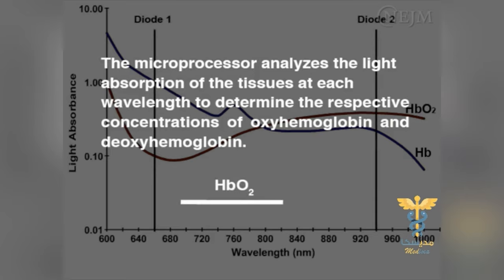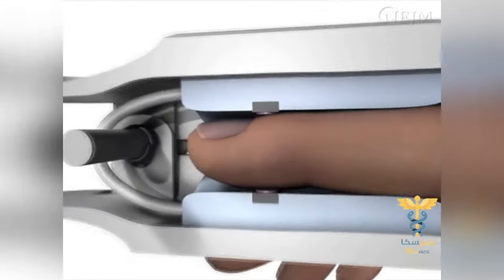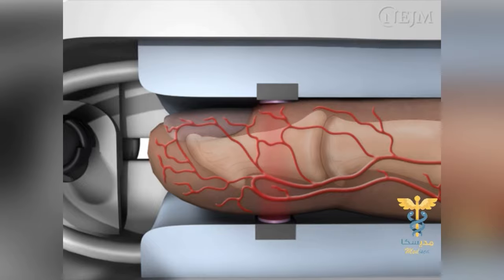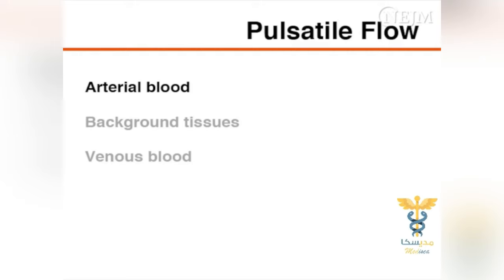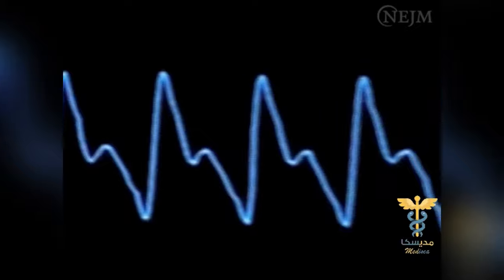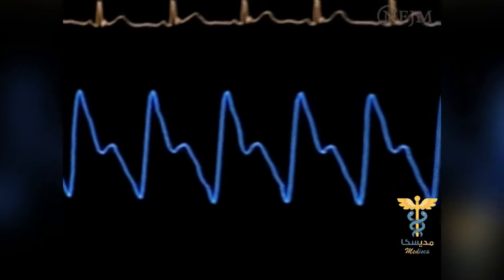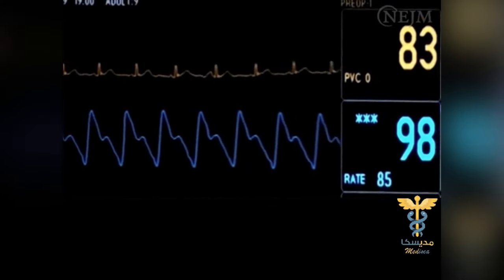The microprocessor divides the concentration of oxyhemoglobin by the sum of the concentration of oxy- and deoxyhemoglobin to determine the arterial blood oxygen saturation, SpO2. The probe is positioned so that the photodetector and light-emitting diodes face each other, with layers of tissue between them. The photodiodes turn on and off several hundred times per second to record the light absorption during pulsatile and non-pulsatile flow. During pulsatile flow, the light absorption of arterial blood, background tissues, and venous blood is detected. During non-pulsatile flow, only the light absorption of background tissues and venous blood is detected. The microprocessing unit compares the light absorption during pulsatile and non-pulsatile flow to isolate the light absorption of arterial blood and thus determine the arterial blood oxygen saturation.